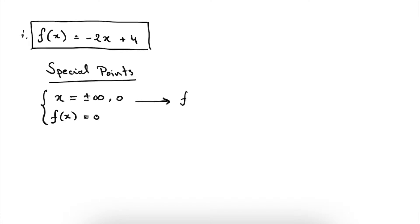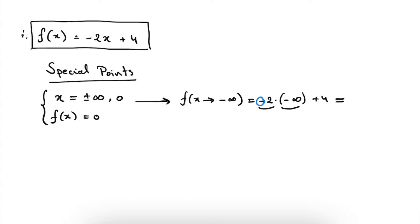Let's calculate now what the function value becomes for our special x points. When x becomes minus infinity, we get minus 2 times minus infinity plus 4. When we are working with infinities, the only thing that really matters is the sign of the infinity. We have to multiply minus infinity with minus 2, and minus times minus gives plus. So this will tend to plus infinity — a very large positive number. The plus 4 is irrelevant when talking about such large numbers.